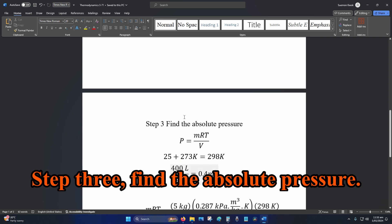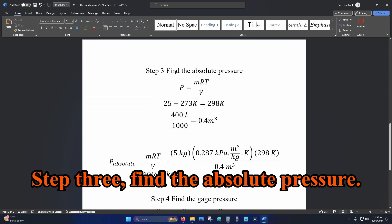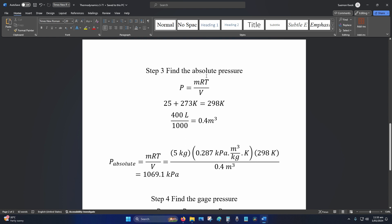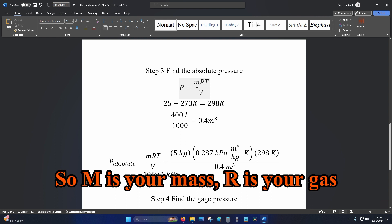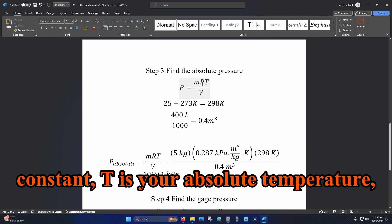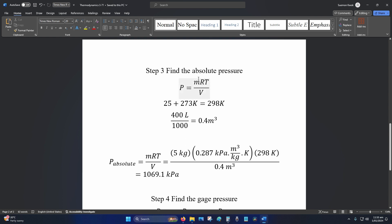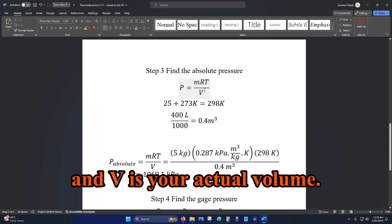Step three: find the absolute pressure. So the formula is P equals m R T divided by V. So m is your mass, R is your gas constant, T is your absolute temperature, and V is your actual volume.